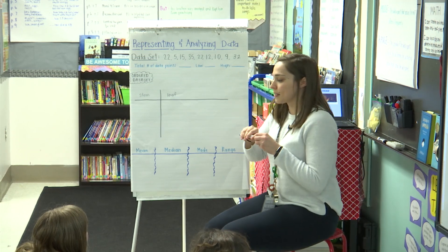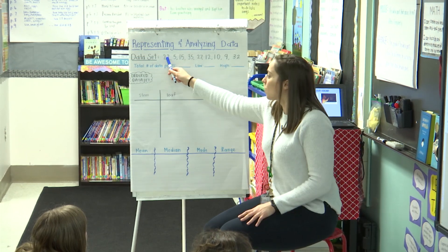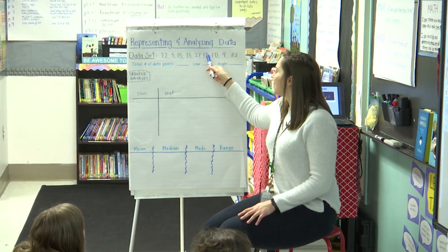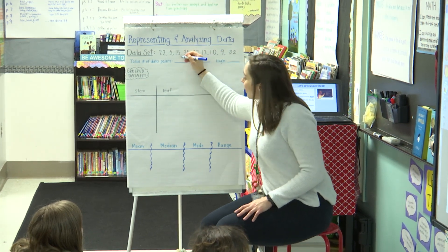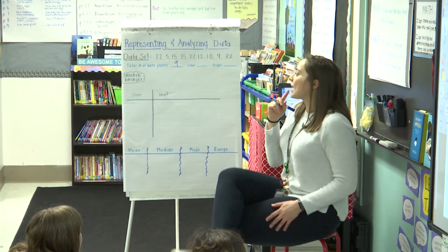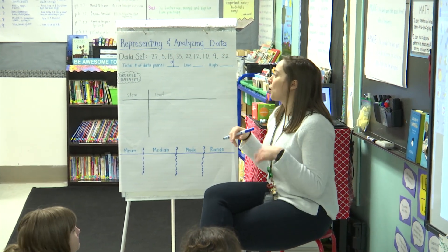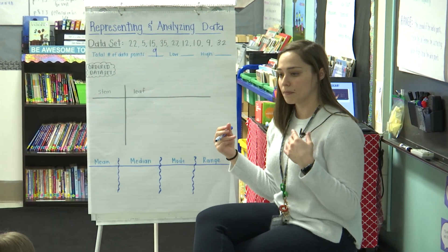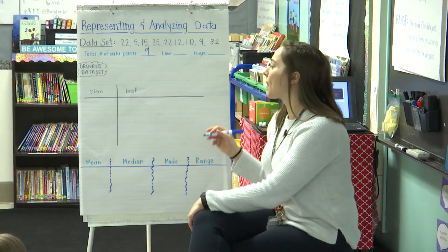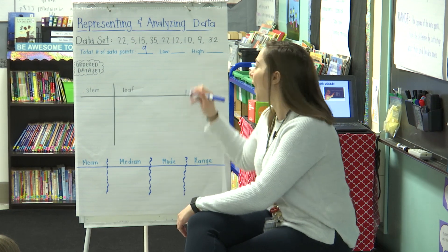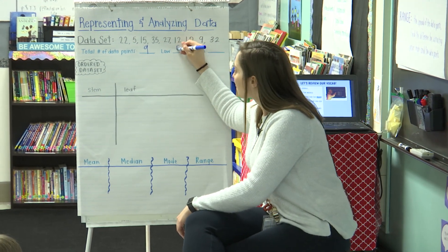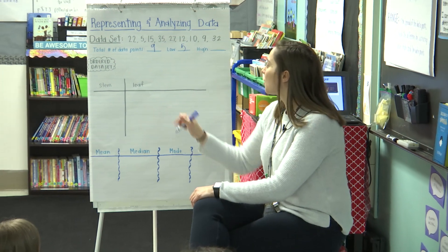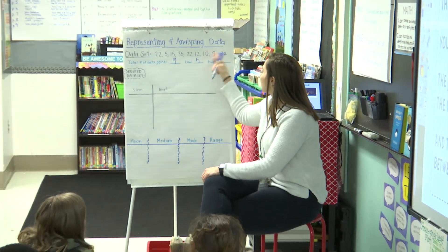Let's count our data points: one, two, three, four, five, six, seven, eight, nine — so I have nine data points. I'm looking for my lowest and my highest data point. What is my lowest data point, Shania? Five. And what is my highest data point, Darnisha? Thirty-five. Very good.